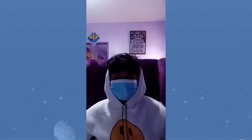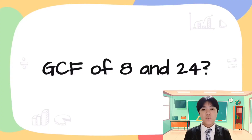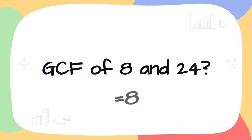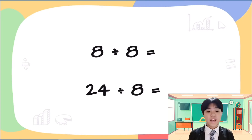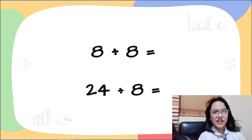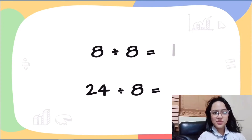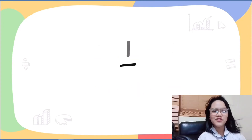Teacher, I'm done. I'm also done. Me too. I also finished the question. So Leandro, what is the GCF of 8 and 24? Their GCF is 8. So Denise, if 8 is the GCF, then what is the outcome if we divide both 8 and 24 by 8? I wrote in my answer that the outcome of dividing both 8 and 24 by 8 results in 1 and 3. So my final answer is 1 over 3. Correct answer, Denise.